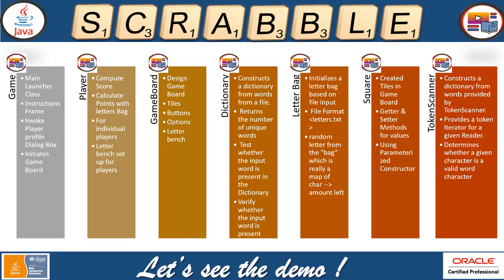The letter bench helps you pick random alphabets for individual players and puts them in a bench, from where the player picks letters to make a word on the game board. Once the game board is set up, the letter bench is initialized, which initializes the letter bag. Based on file input, the file format starts from letters.txt which includes all the letters and their respective point values. For example, S equals 1 — so whenever a player picks the letter S, the number 1 will be added to their points.